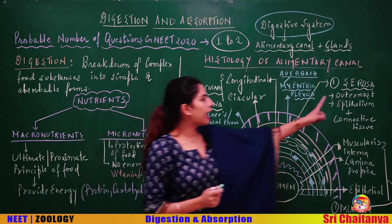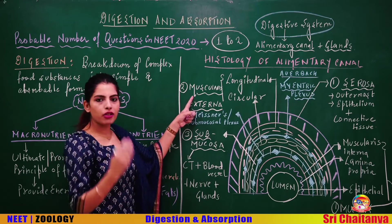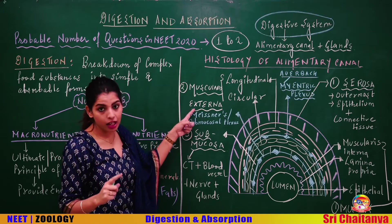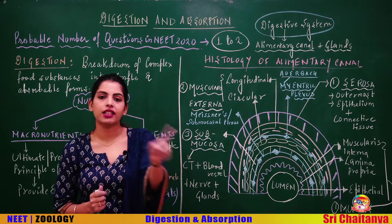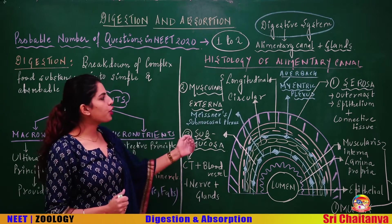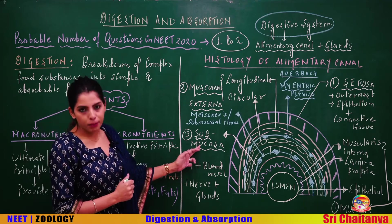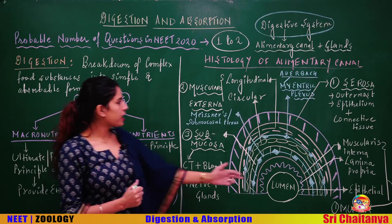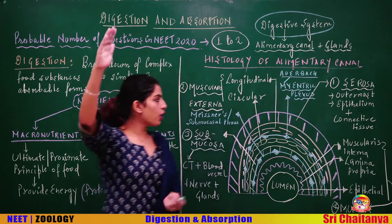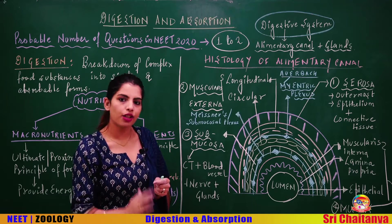The outermost layer is serosa. The second layer, moving from outside to inside, is muscularis externa. The next layer is submucosa, and the innermost layer is mucosa. So: outermost serosa, then muscularis, then submucosa, then mucosa.